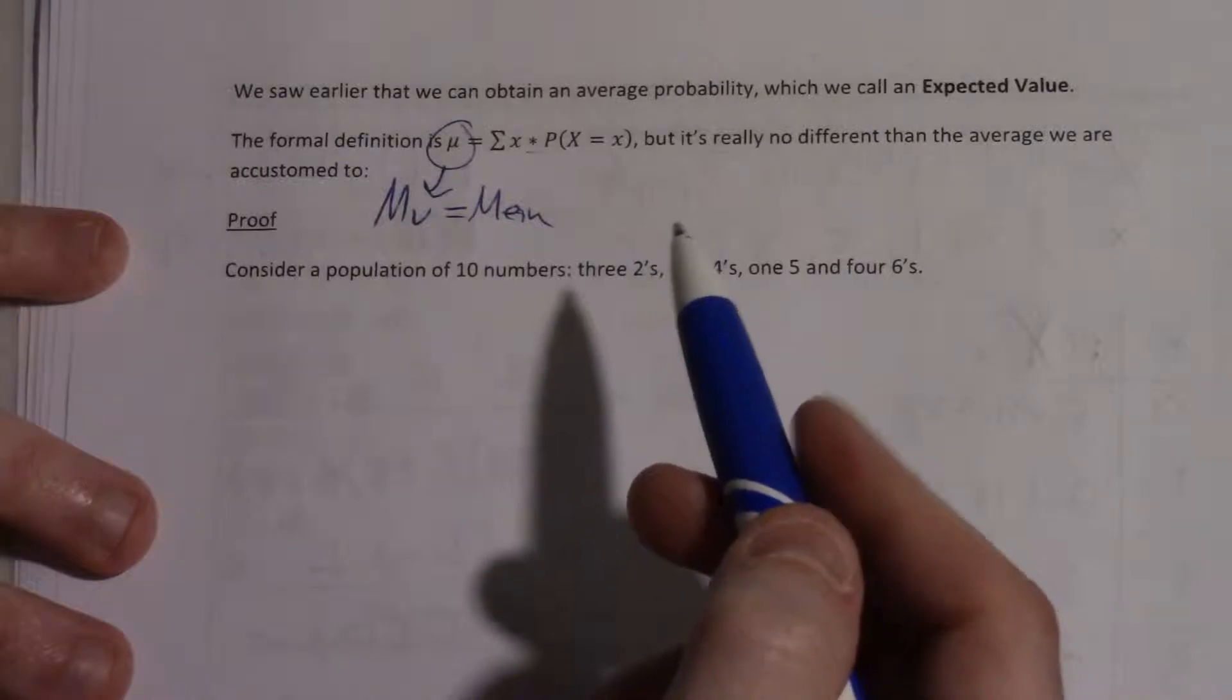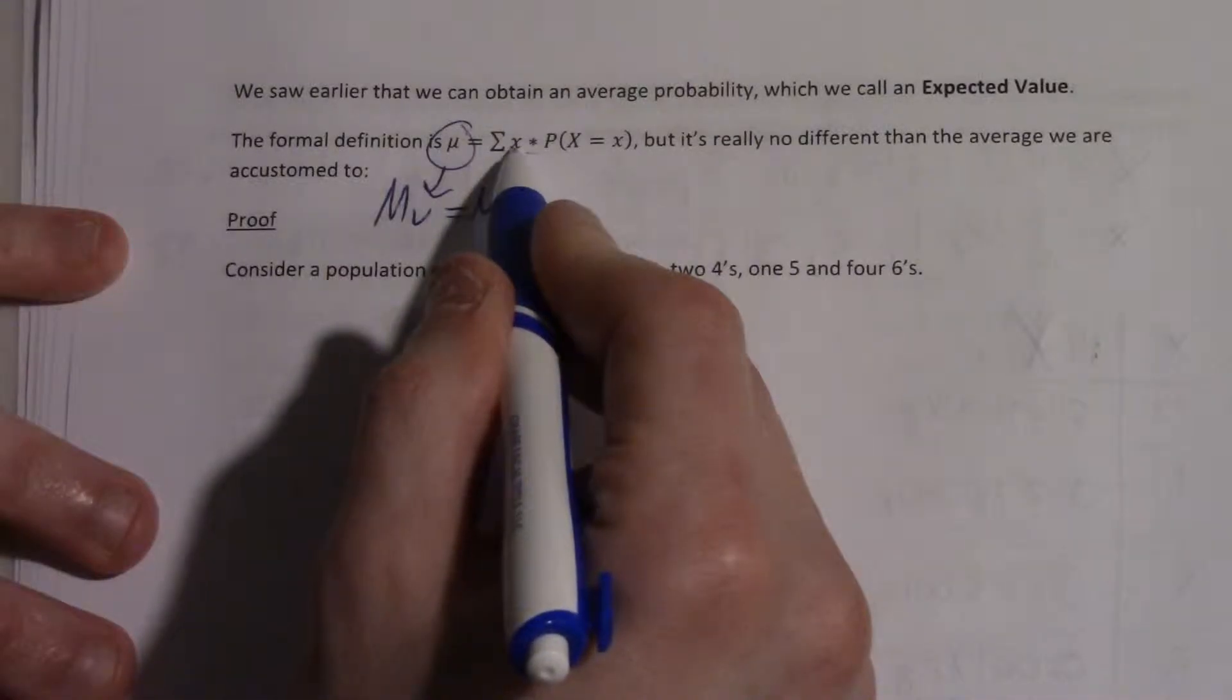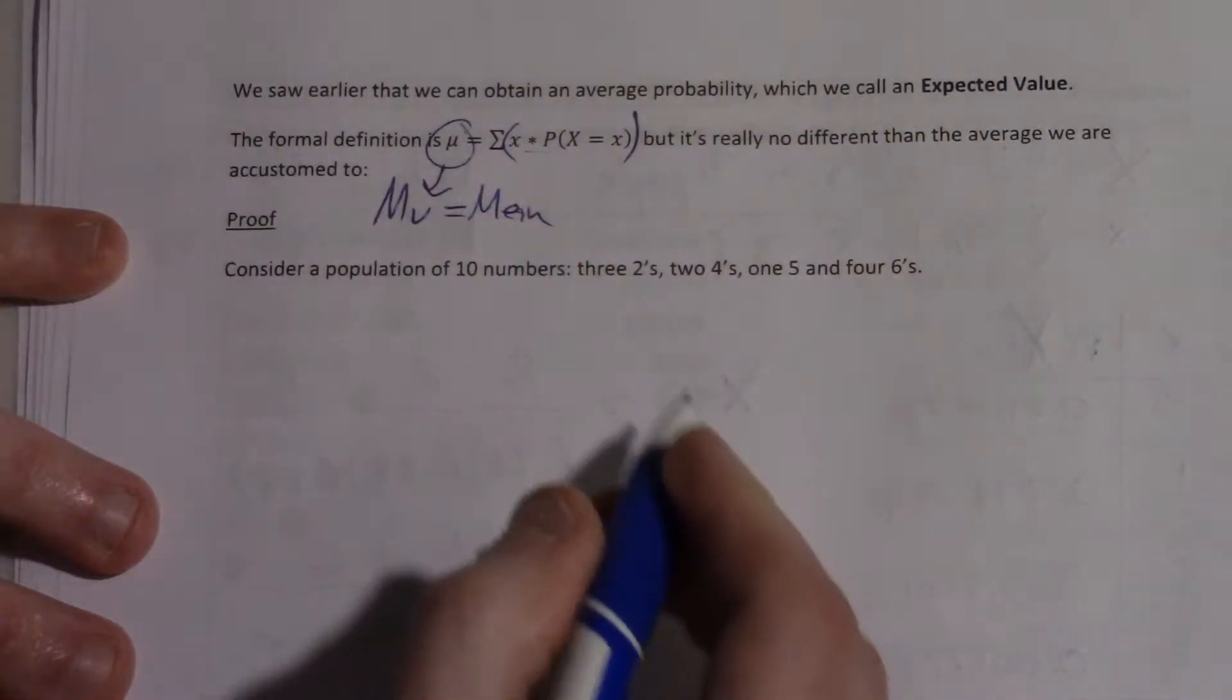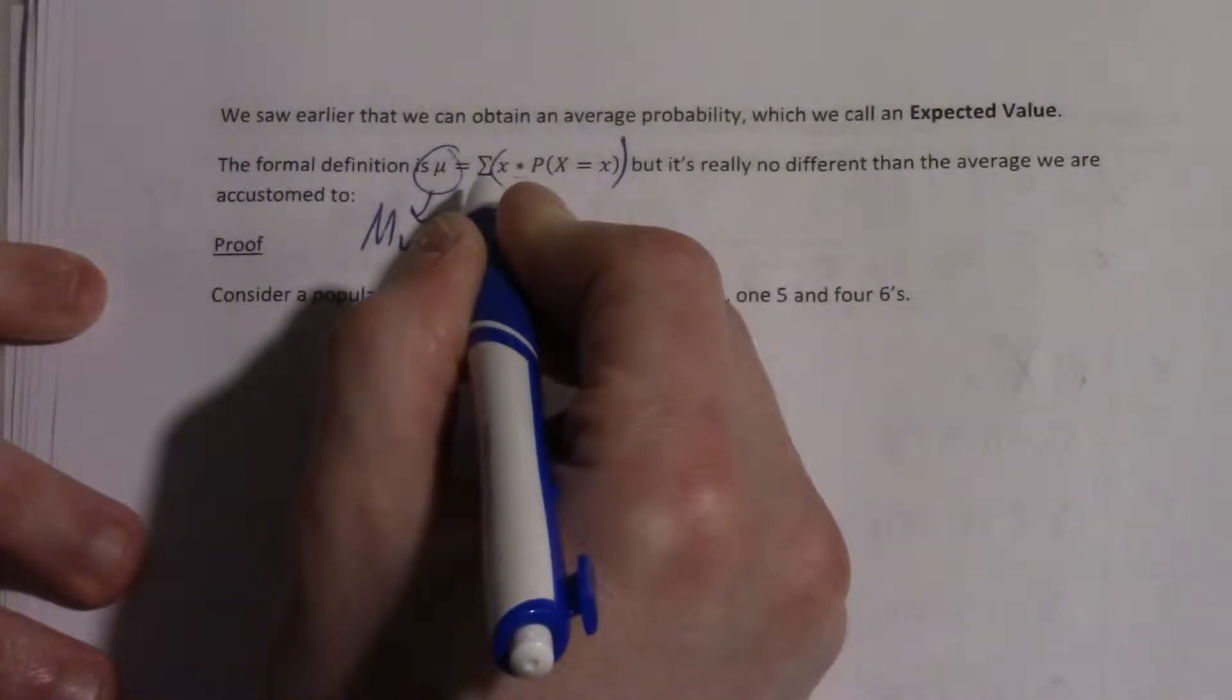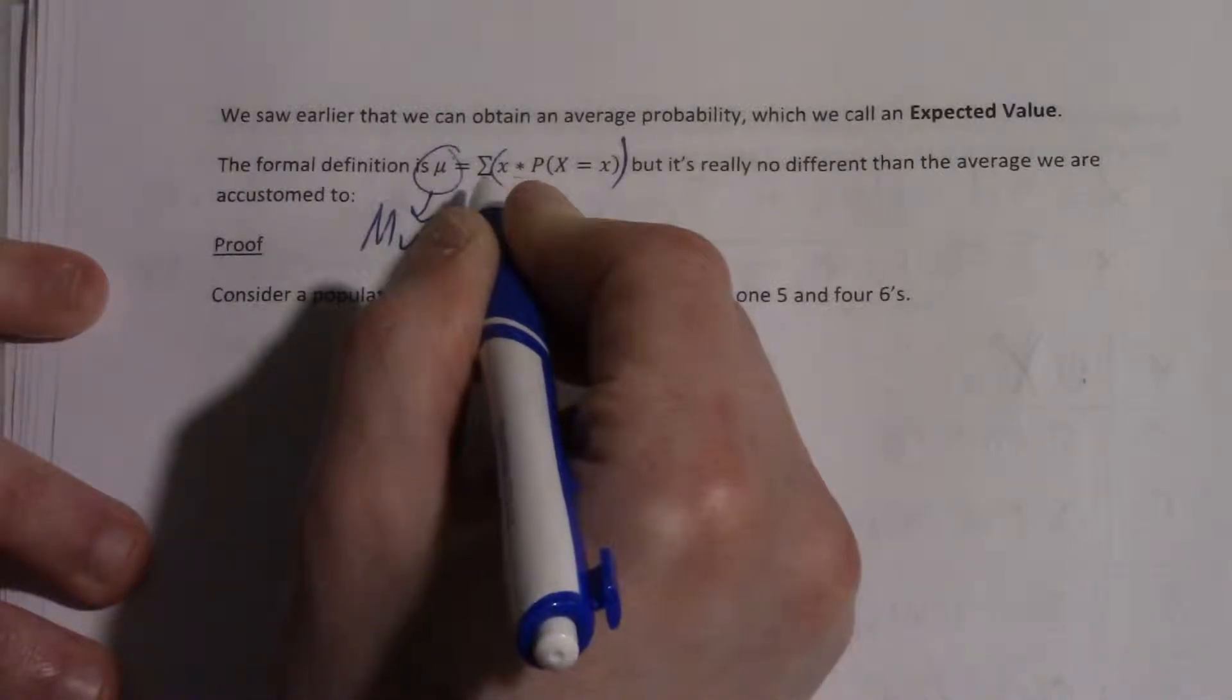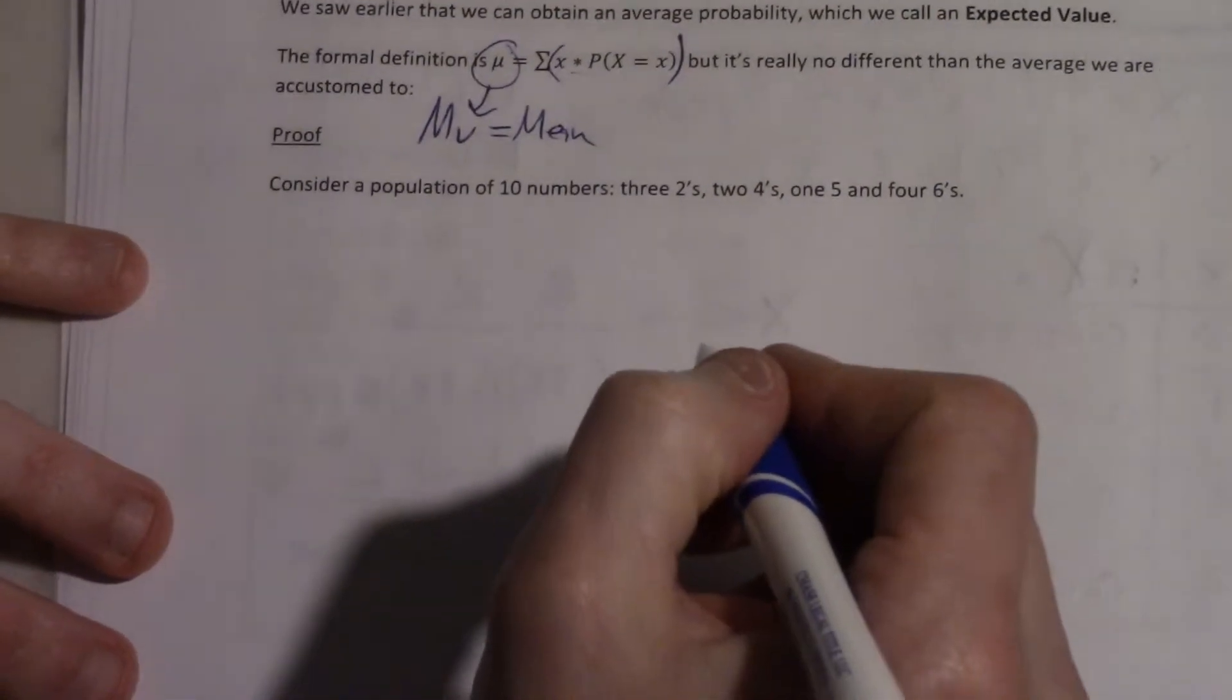So we have this new way of computing an average. But as we'll see in this example, it's the same as the old way. It's just a shorthand version. So what this formula says is, let's take each little x multiplied by its probability. So it's this piece. And then this weird E shape is actually a capital Greek S, which stands for sum. So this says, add up all of these products. And that gives you the average.